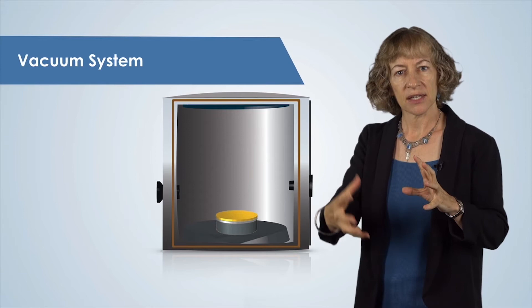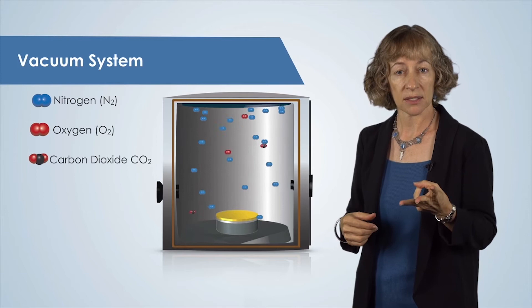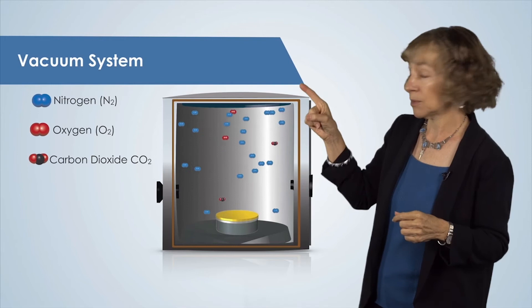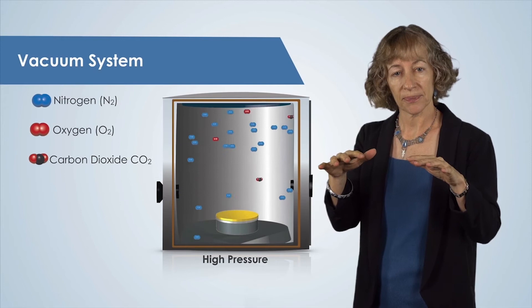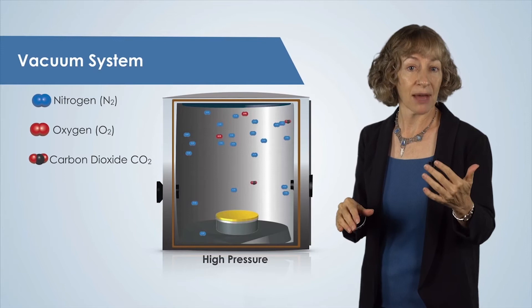Let's think about a sealed chamber for a minute. The air inside is made up of different types of molecules, such as nitrogen, oxygen, and carbon dioxide. These air molecules are moving and bouncing around inside the chamber, as we see here. The more molecules, the higher the air pressure in the chamber. As long as the temperature is constant, pressure is a measure of the amount of gas molecules within the chamber. As we remove the air from the chamber, we can measure how much air remains by measuring the pressure.